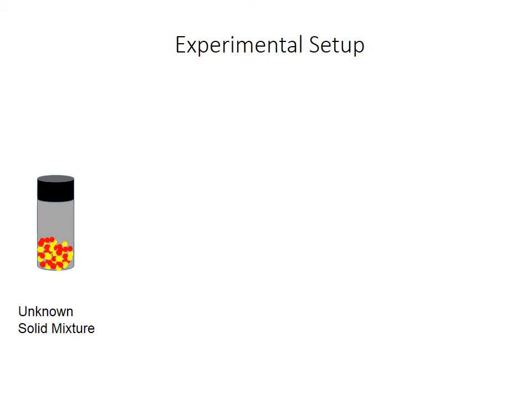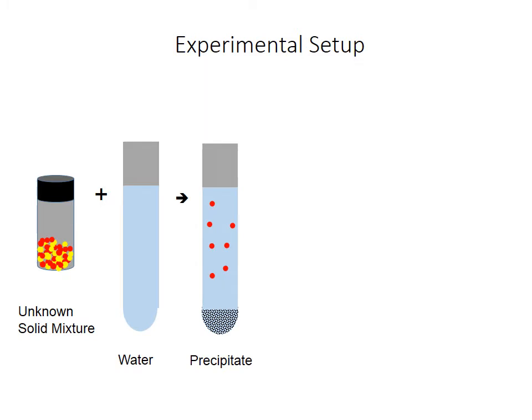Let's take a look at a simulation. In the lab you'll be given an unknown solid mixture — it won't have red and yellow balls in it, but I'm pretending that's a mixture of sodium phosphate and barium chloride dihydrate. You're going to dump it into water. What will happen is the precipitate barium phosphate will form, and you can only form as much as the limiting reactant allows. You'll see solid on the bottom — it'll be white — and whatever is left in excess will remain in solution.